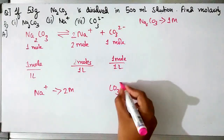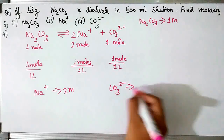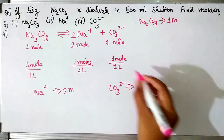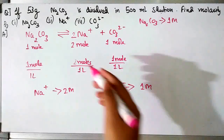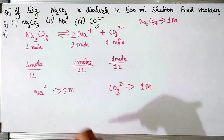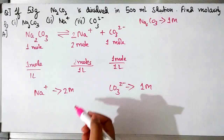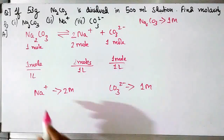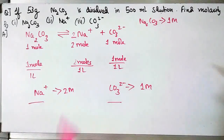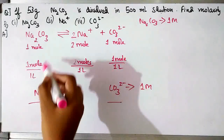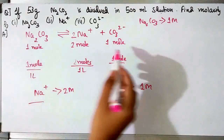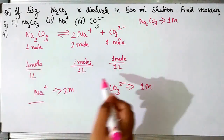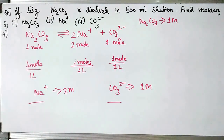Similarly, since 1 mole of Na₂CO₃ gives 1 mole of CO₃²⁻, the molarity of CO₃²⁻ will be 1M, because 1 mole of that particular ion is present in 1 litre of solution. This is how you find the molarity of ions: first find the molarity of the compound, then compare and find the molarity of the respective ions.